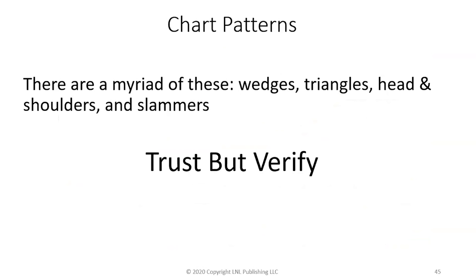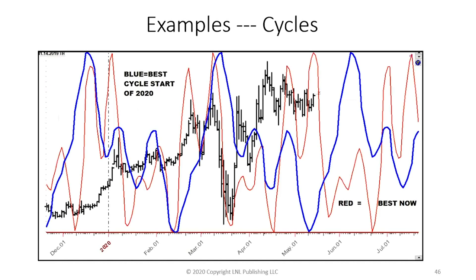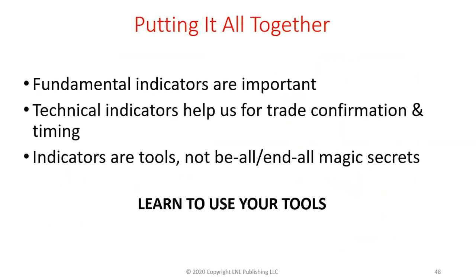You can see the same idea on Costco. Chart patterns — wedges, triangles, head and shoulders — trust them but verify them; they don't all work. They work better when combined with a time of heavy accumulation in the market, with a bullish chart pattern working best when you're in an uptrend. Cycles — the problem is they vary all over the place. The blue was the best cycle at the start of 2020, but right now the best is red because these cycles dance and move back and forth. You really have to update cycles — it's a labor of love and an art, always a moving target.